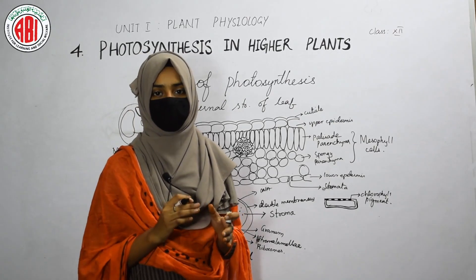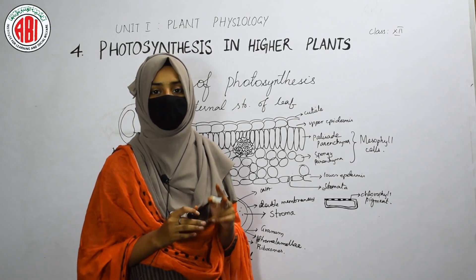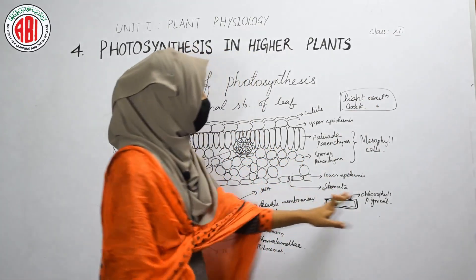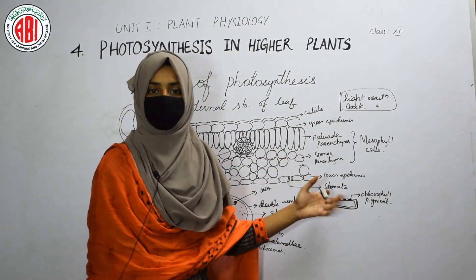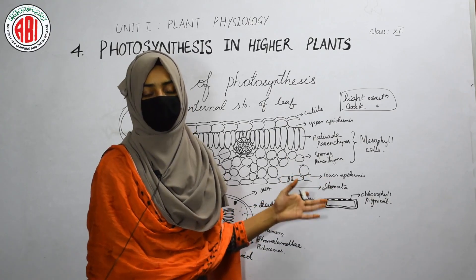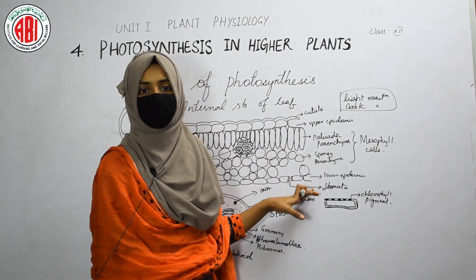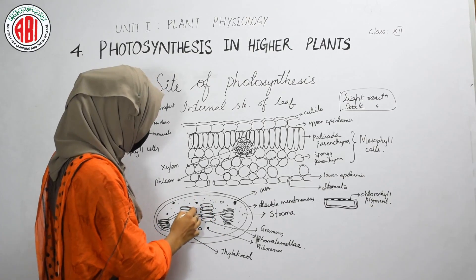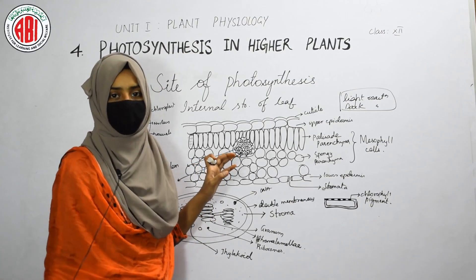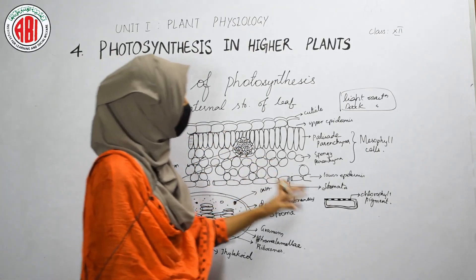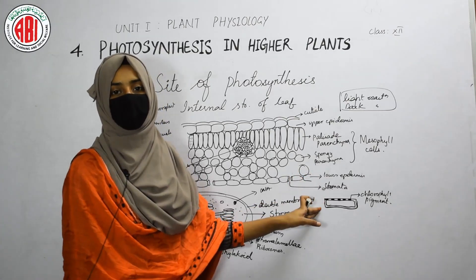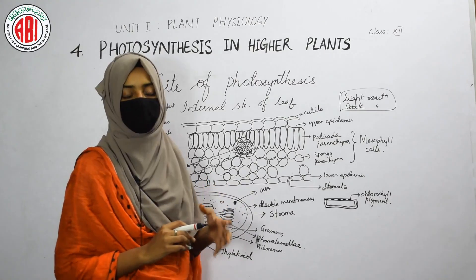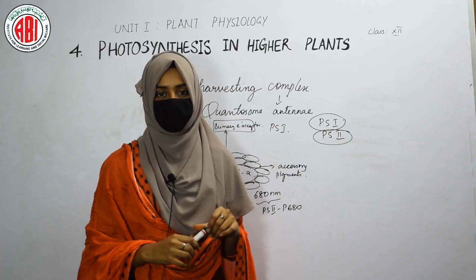Photosynthesis is completed in two reactions: light reaction and dark reaction. The pigments present in the thylakoid absorb light, so the light reaction takes place in the thylakoid. The dark reaction takes place in the stroma — the inner jelly-like fluid of the chloroplast. That's all for today; we'll meet in the next class. Thank you.